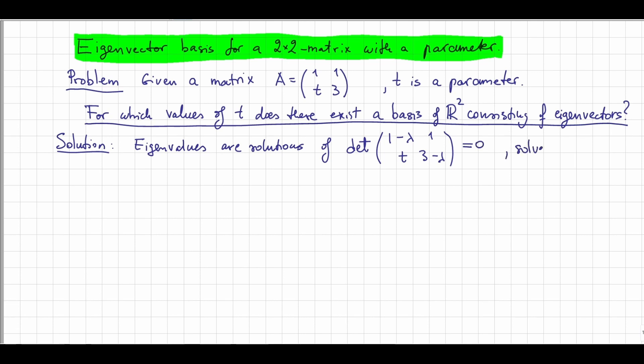We can calculate this determinant either by direct calculation, by taking (1-λ) times (3-λ) minus t. And calculating that, we would get λ² minus 4λ plus 3-t.